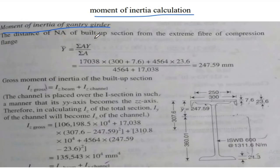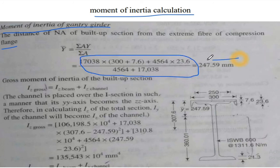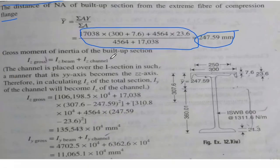Now calculate the moment of inertia. First, find the distance of the neutral axis of the built-up section from the extreme fiber of the compression flange (y'): y' = Σ(A × ȳ) / ΣA = 247.59 mm. Gross moment of inertia: Iz_gross = Iz_beam + Iz_channel.